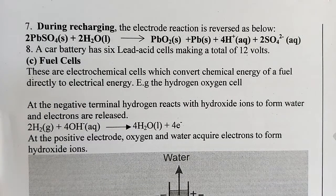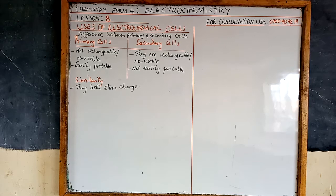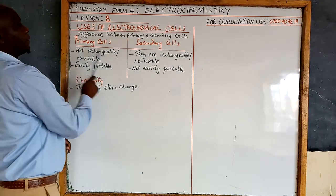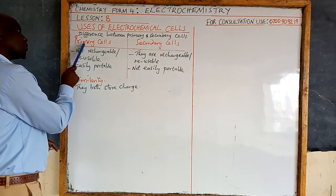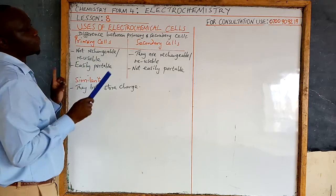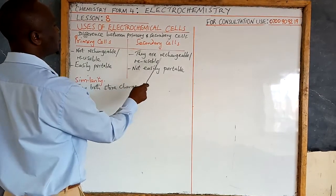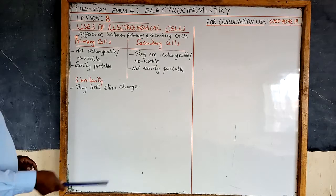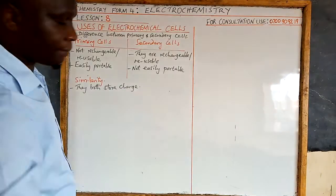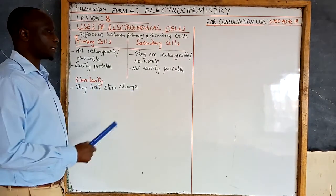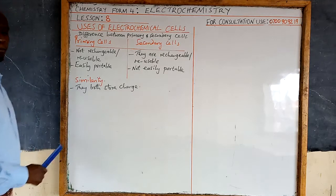A small comparison between primary and secondary cells: primary cells are not rechargeable — use it once and that's the end, which is why they are called primary. Secondary cells can be used a second, third time — they are reusable and rechargeable. Another difference is that primary cells are easily portable, like this small dry cell, whereas a car battery is very heavy and not easily portable.